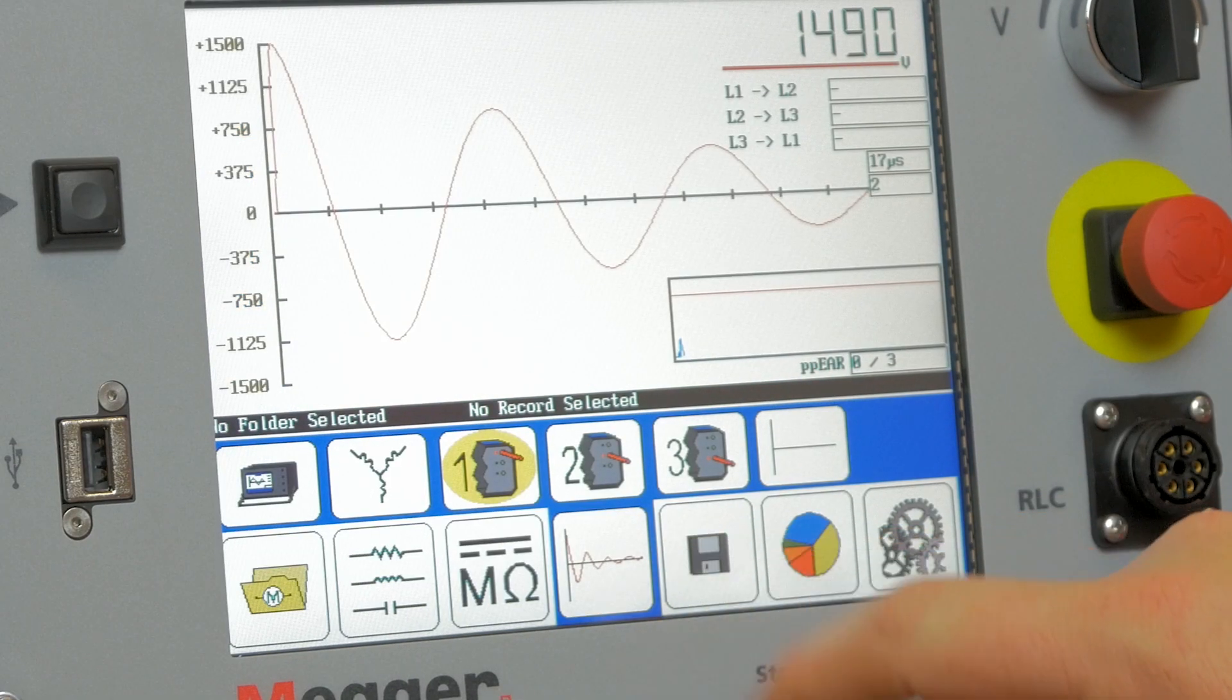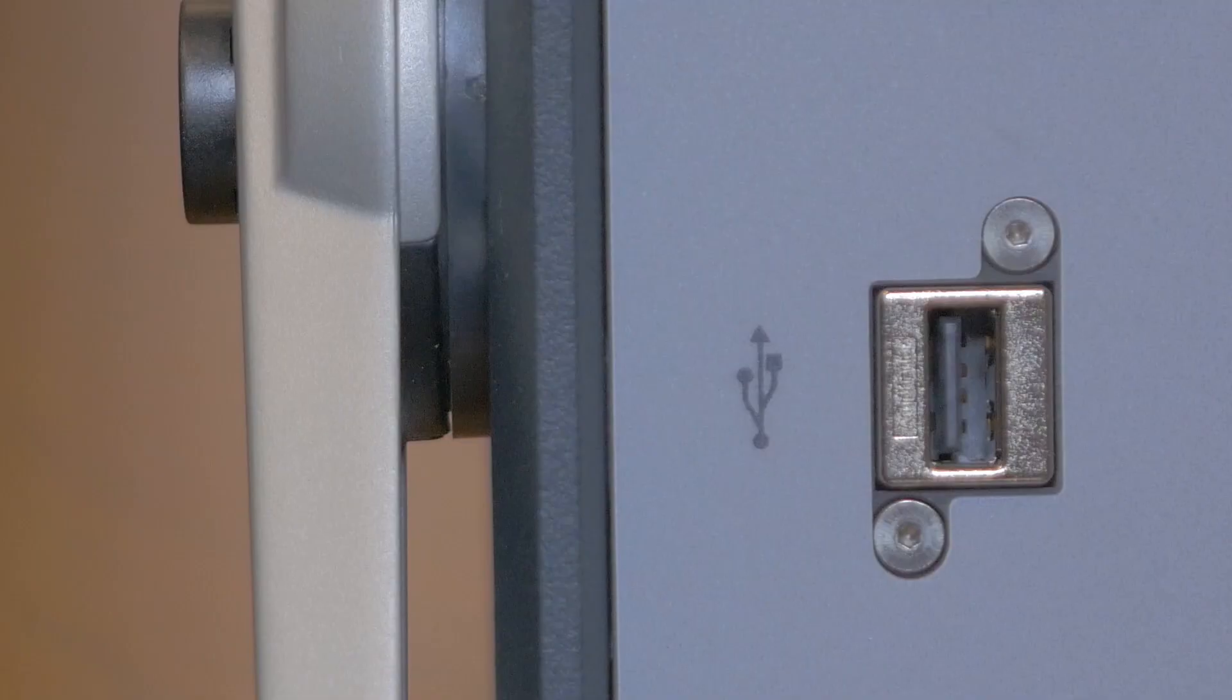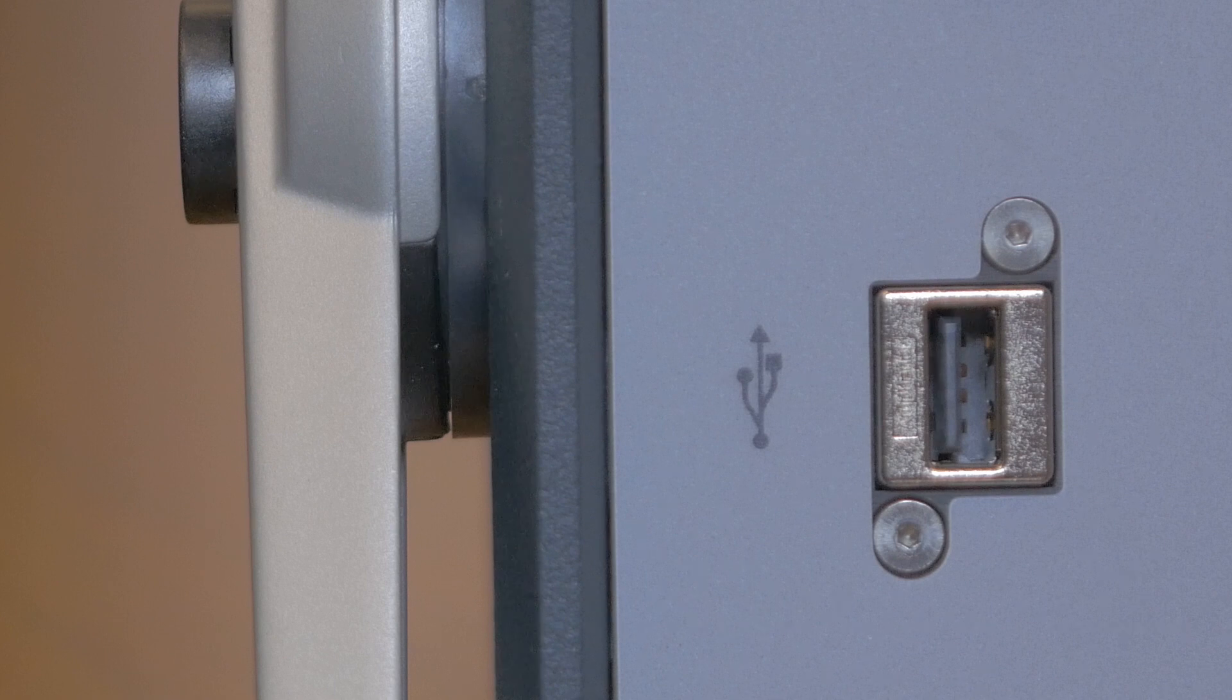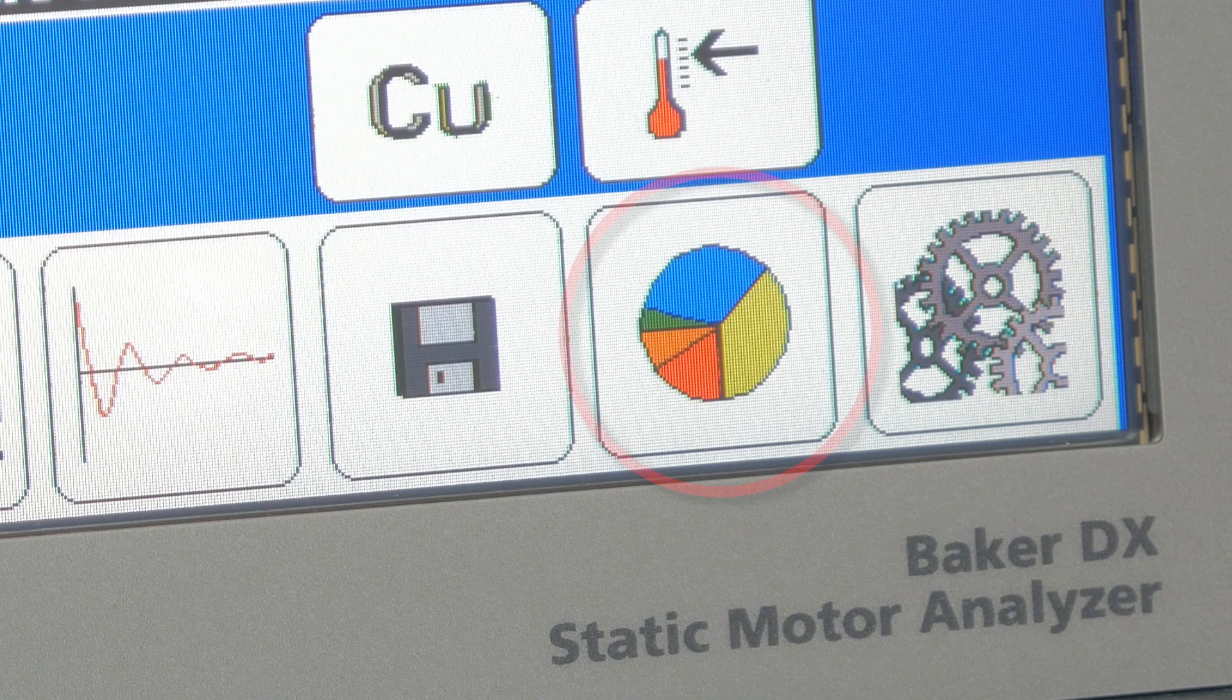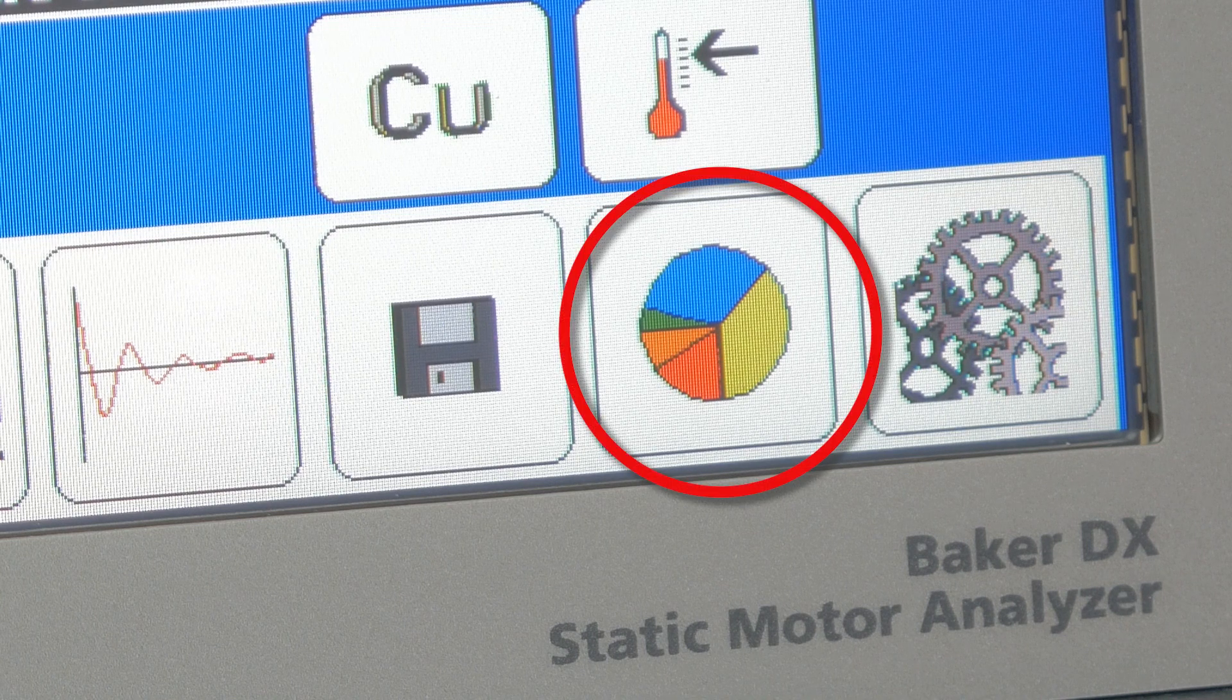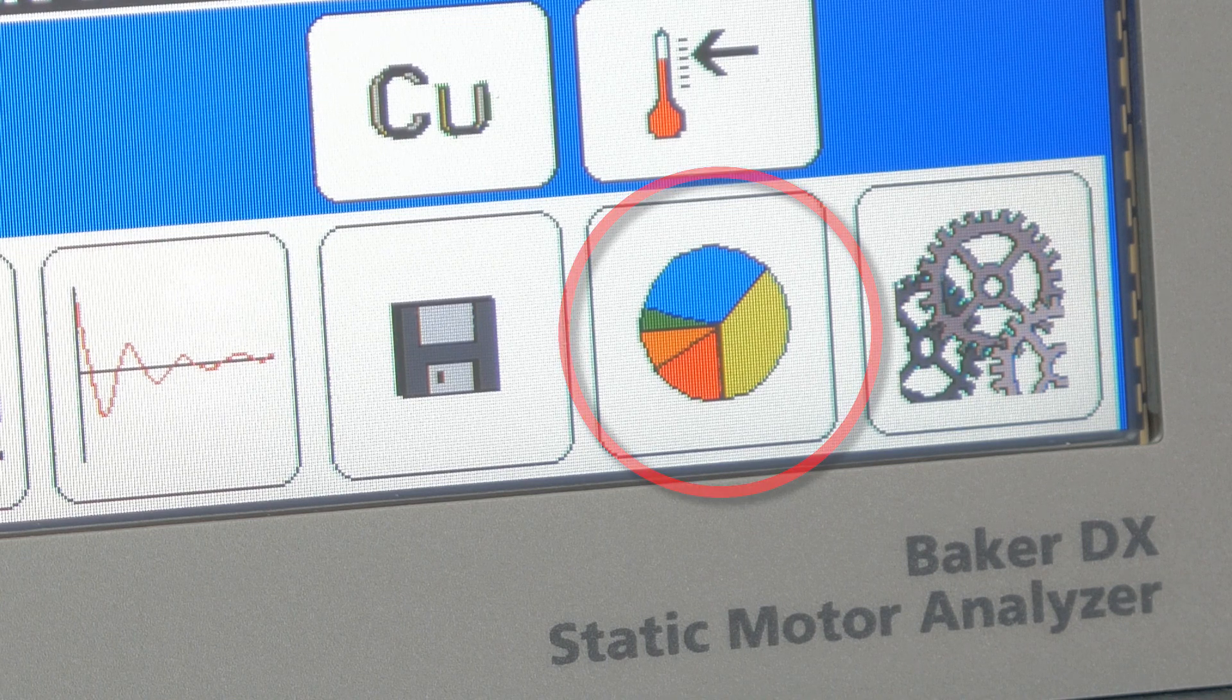Save test data by pressing the save file icon. Data can be exported via USB for archive and desktop report generation. Reports can also print directly from the DX. Company's logos can be added to the report.